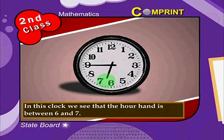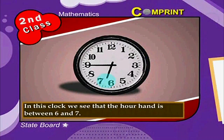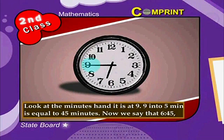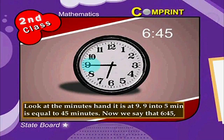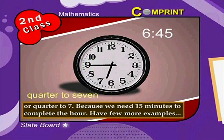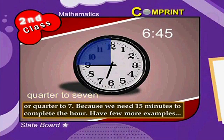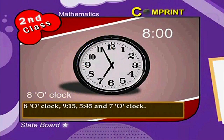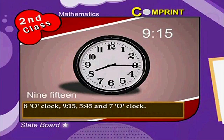In this clock, the hour hand is between 6 and 7. The minutes hand is at 9. 9 into 5 minutes is equal to 45 minutes. So we say 6:45, or quarter to 7, because we need 15 minutes to complete the hour. A few more examples: 8 o'clock, 9:15, 5:45, and 7 o'clock.